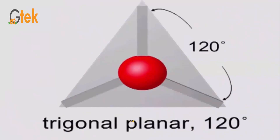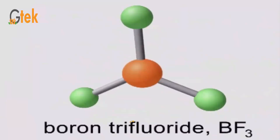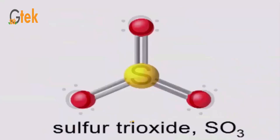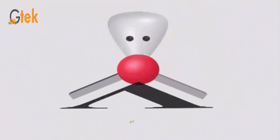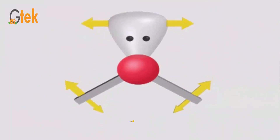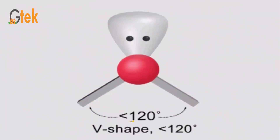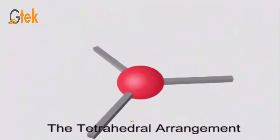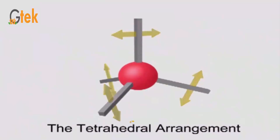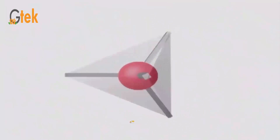Now we will talk about the trigonal planar arrangement. The center element is connected to three others at a bond angle of 120 degrees — that's trigonal planar. The typical examples are boron trifluoride, BF3, and sulfur trioxide, which has a double bond. There are also special elements like ozone, O3, where the molecule takes a V shape with a bond angle less than 120 degrees — approximately 116.8 degrees.